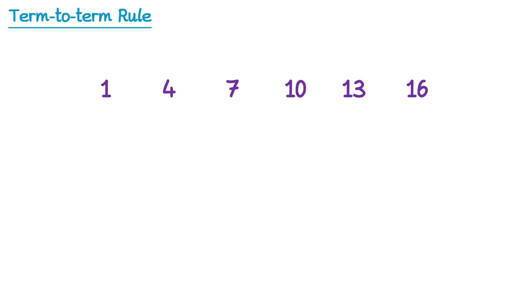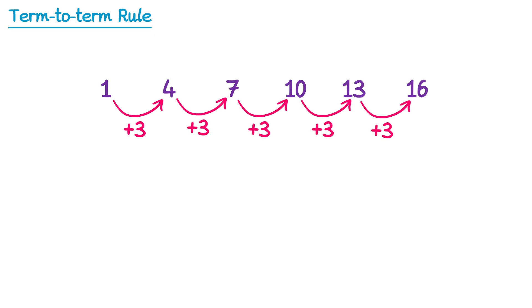In this sequence, to get from the first term to the second term, we can add 3. This is also the same to get from the second term to the third term. In fact, it's the same to get from any term to the next term. Since this is how we get from one term to the next, we call it the term-to-term rule. So the term-to-term rule for this sequence is just add 3.